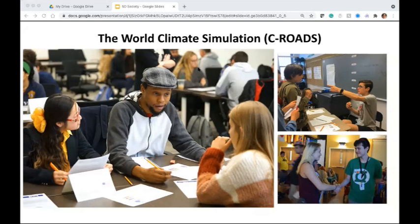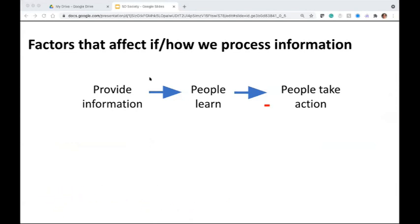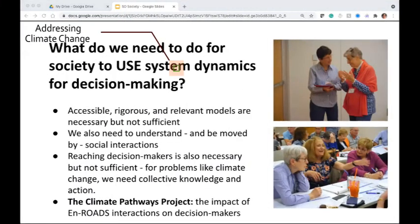You may be representing the president of the US or of China, and participants make public speeches where they pledge to reduce emissions and deforestation and also contribute financially to the green climate fund. Most of us in the SD world are focused on information and spend a lot of time and energy trying to communicate about climate change. We've tried the information deficit model, which basically says that if we provide people with solid, rigorous, accessible information they will learn and take action. But what we need to address climate change is collective knowledge and collective action.